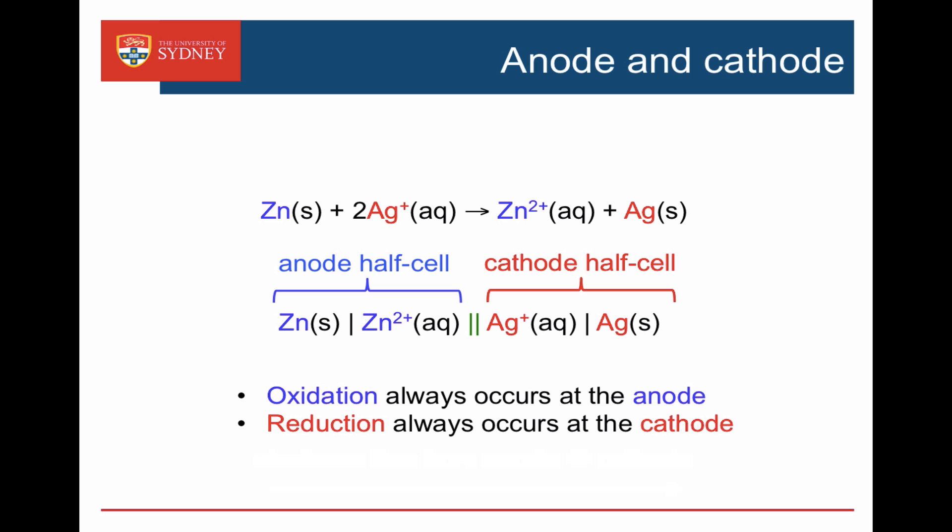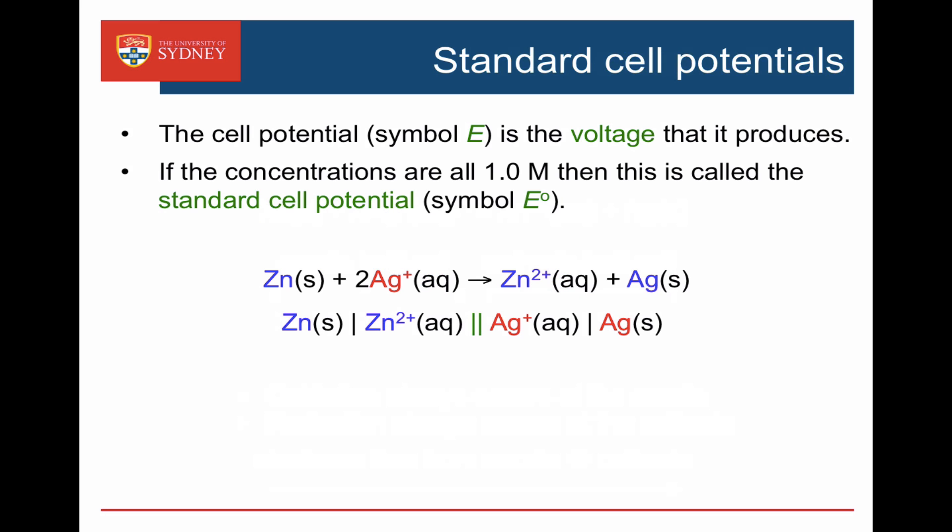Oxidation always occurs at the anode, and reduction always occurs at the cathode. When I connect up these cells, those electrons will transfer and I can measure a voltage. That voltage is called the cell potential, symbol E.